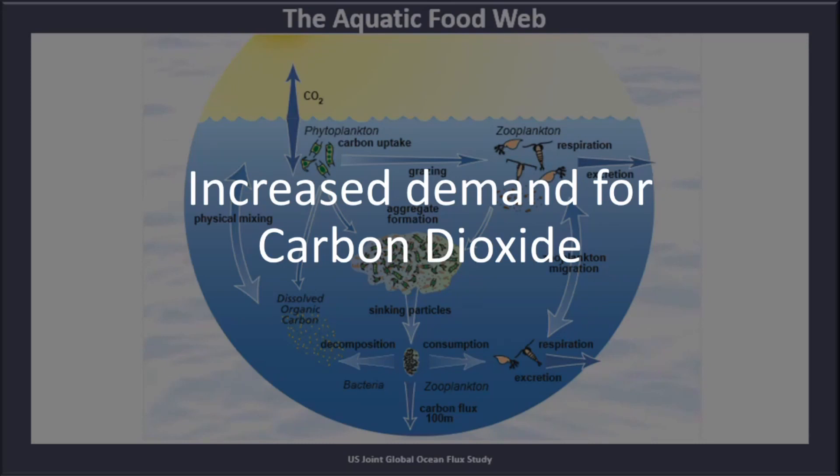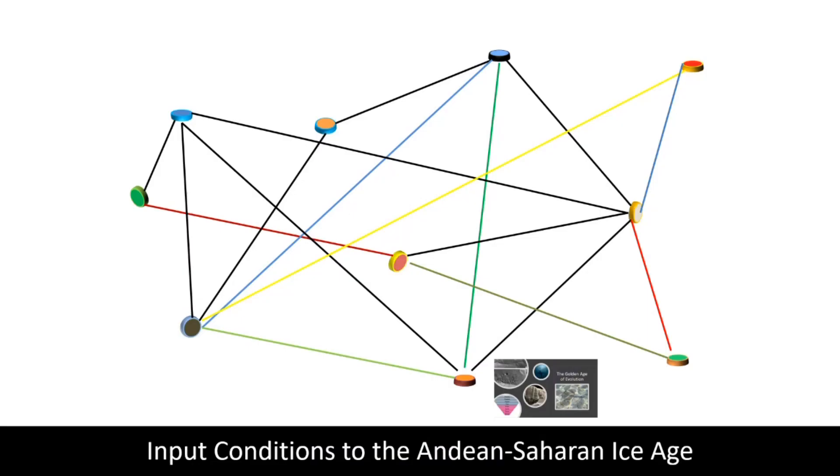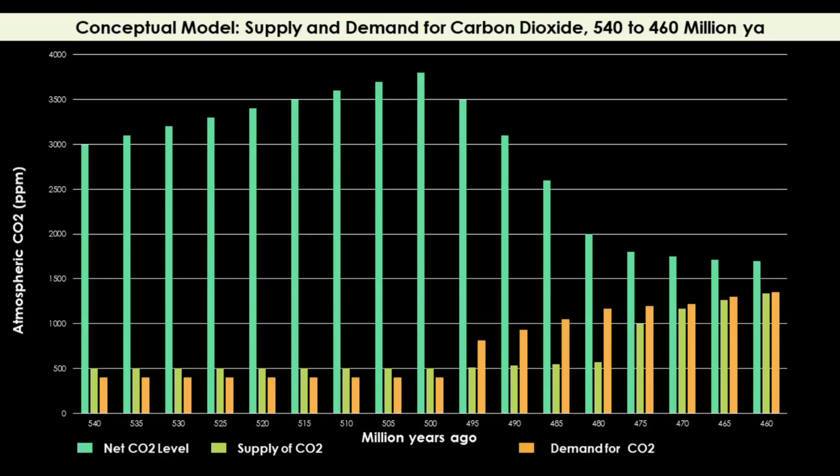One effect of this golden evolutionary period was the increased demand for carbon dioxide from phytoplankton sitting at the top of the aquatic food web, so much so that the demand began to outstrip the supply. The level of carbon dioxide in the atmosphere fell by around 2,100 parts per million over 40 million years. The significance of this can be shown by the fact that the delta alone amounts to five times the current total atmospheric level of carbon dioxide.